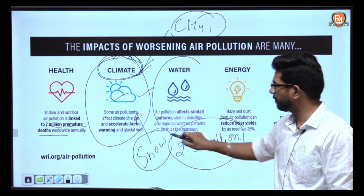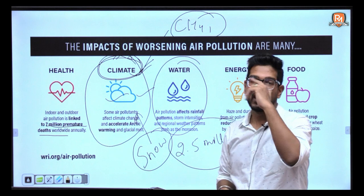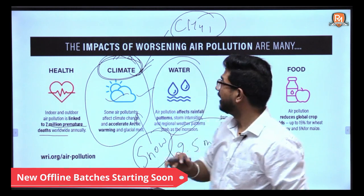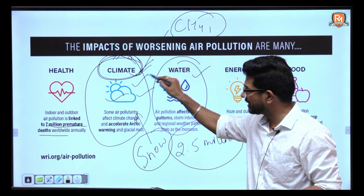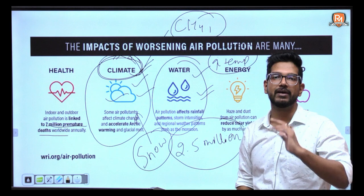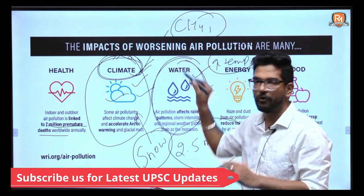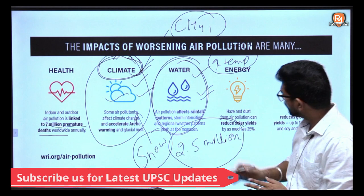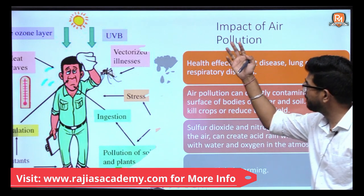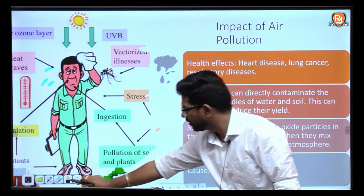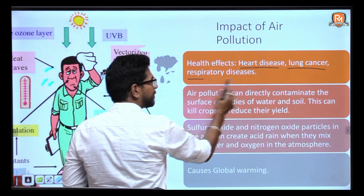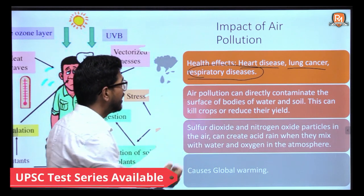Air pollution is also somehow related to water pollution, because rainfall patterns depend on air quality. If global warming increases temperatures, rainfall patterns become erratic and don't follow general trends. In terms of direct human health impacts, air pollution can cause heart disease, lung disease, cancer, and respiratory disorders like asthma.